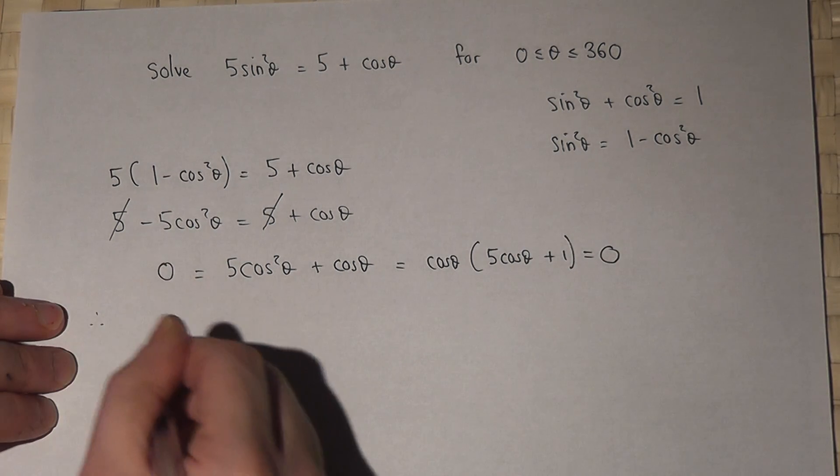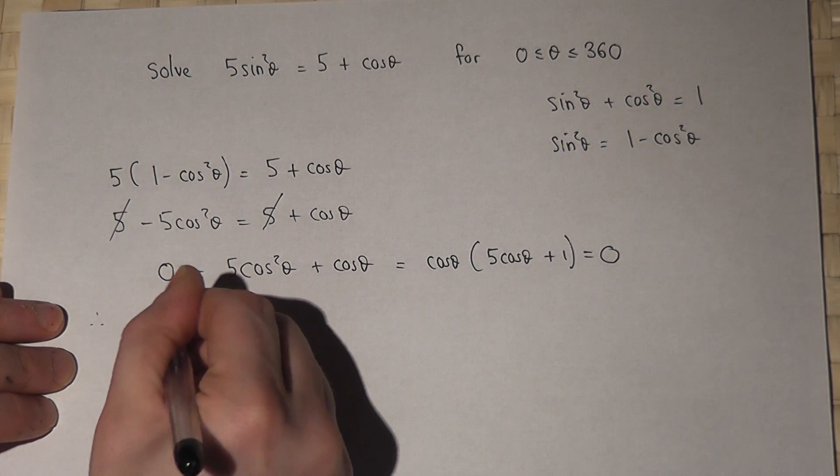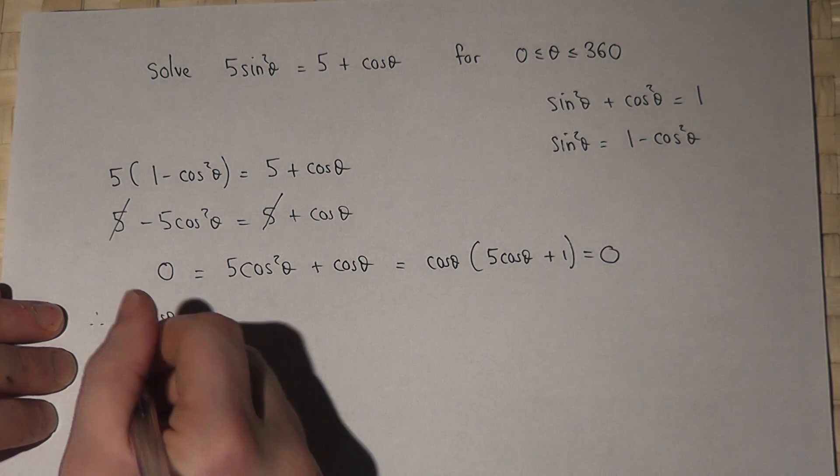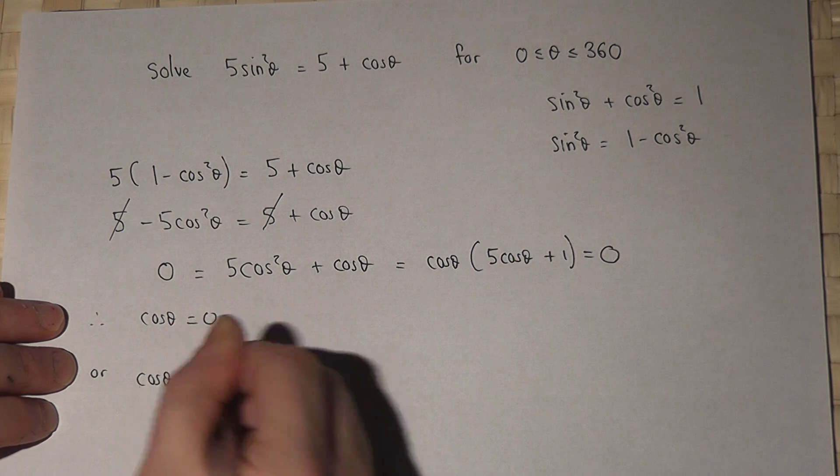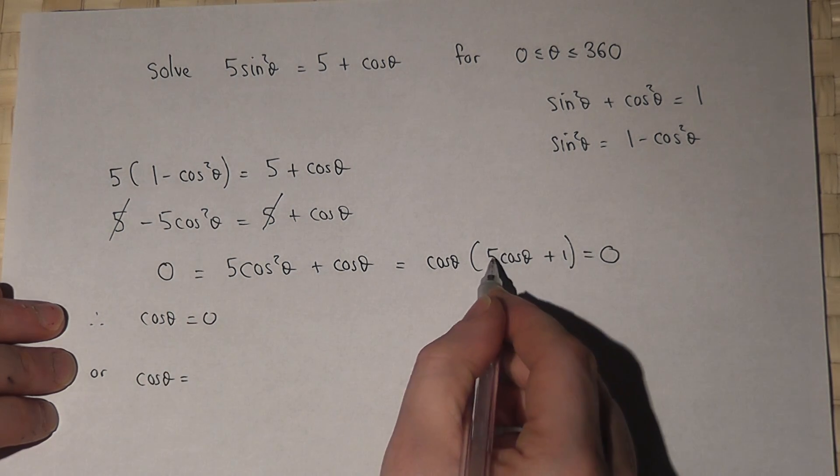So therefore, either cosine theta equals 0 or cosine theta equals minus 1 over 5.